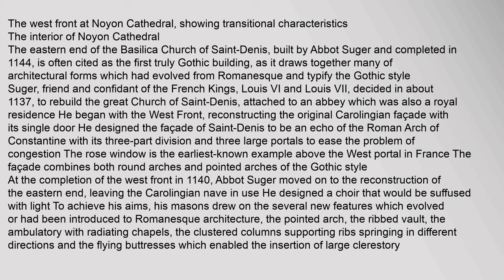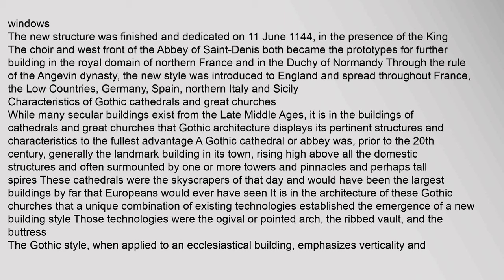Sugar designed the façade of St Denis to be an echo of the Roman arch of Constantine, with its three-part division and three large portals to ease the problem of congestion. The rose window is the earliest known example above the west portal. At the completion of the west front in 1140, Abbot Sugar moved on to the reconstruction of the eastern end. He designed a choir that would be suffused with light. To achieve his aims, his masons drew on several new features: the pointed arch, the ribbed vault, the ambulatory with radiating chapels, the clustered columns supporting ribs, and the flying buttresses which enabled the insertion of large clerestory windows.